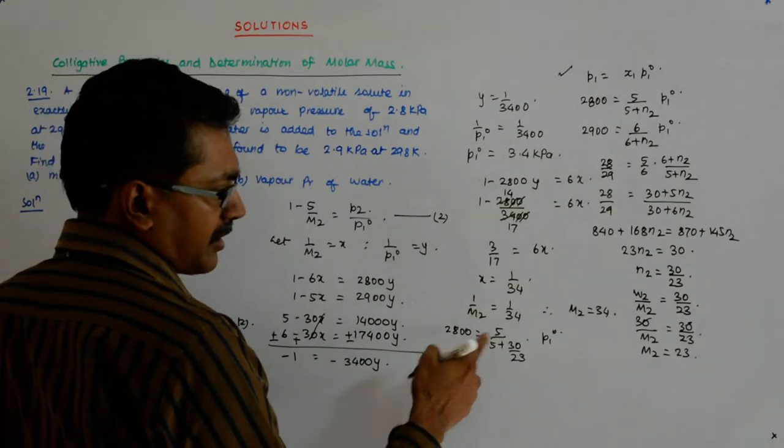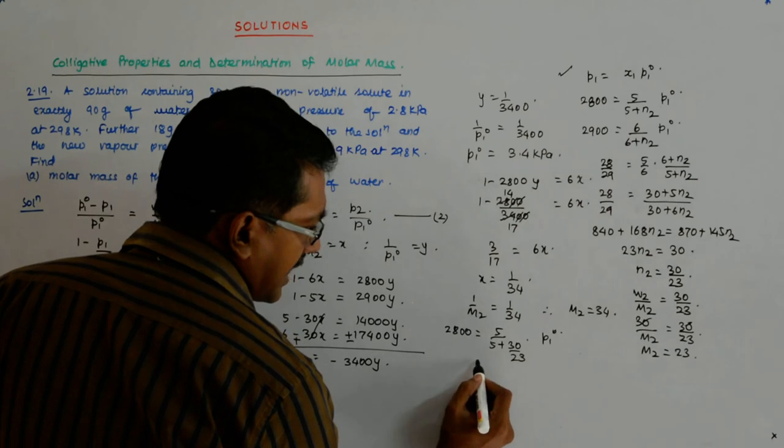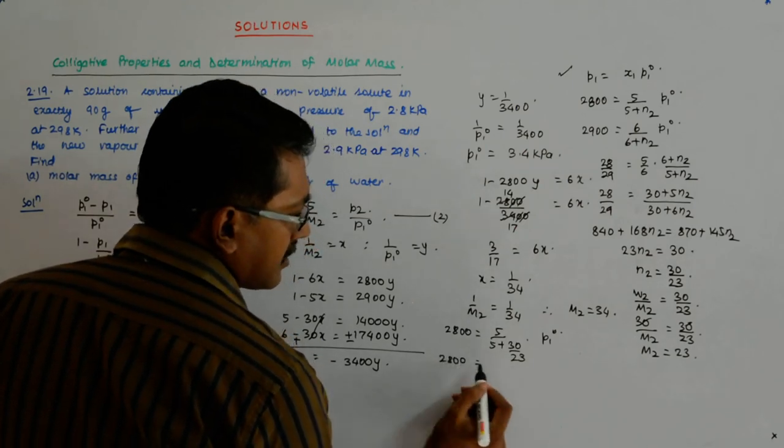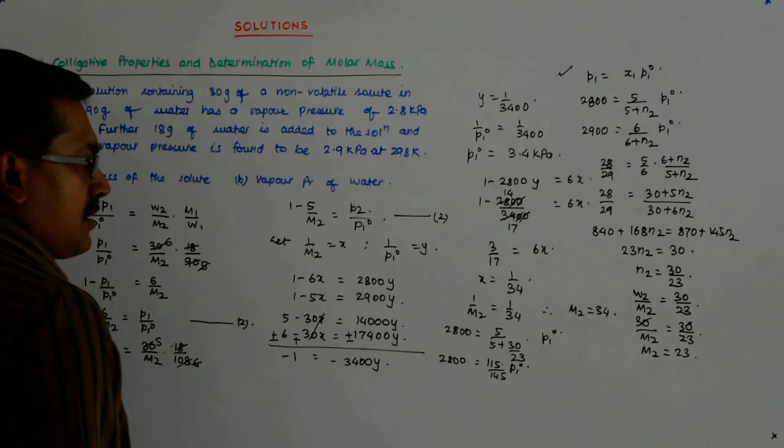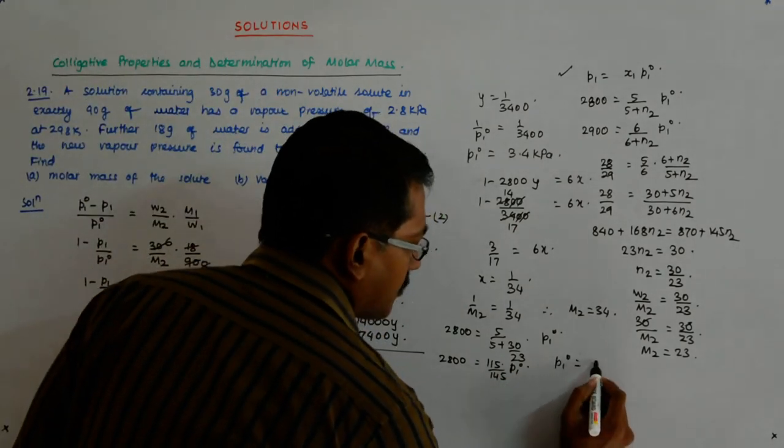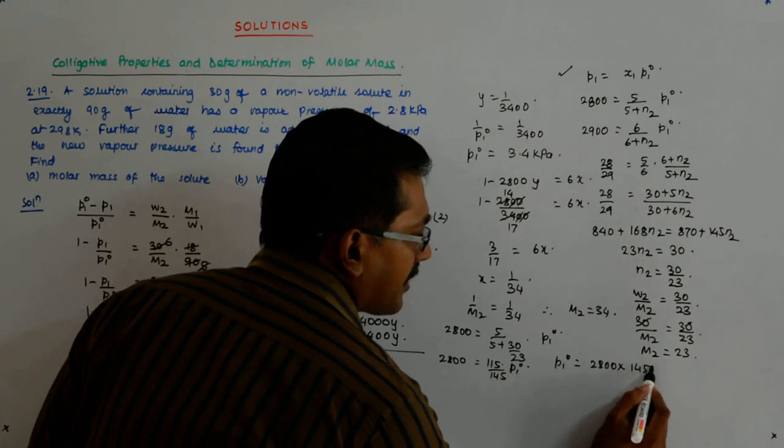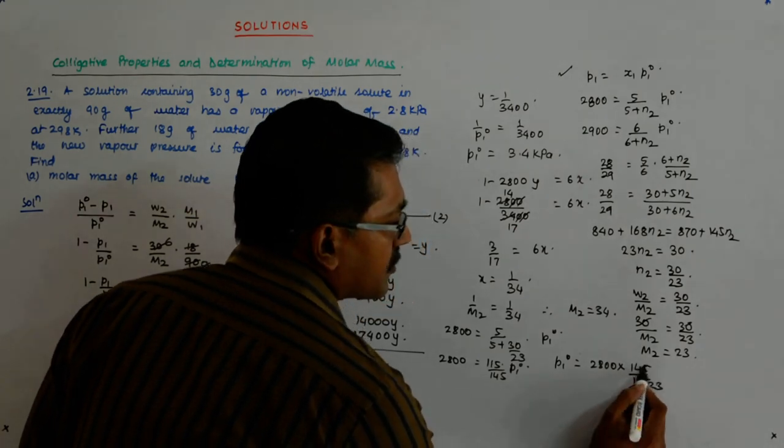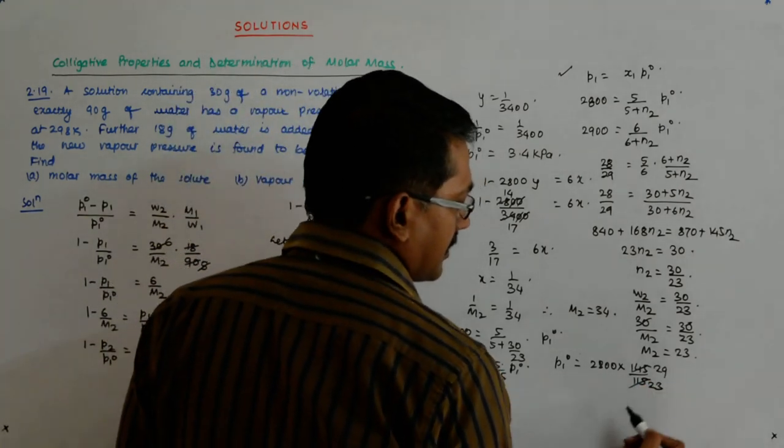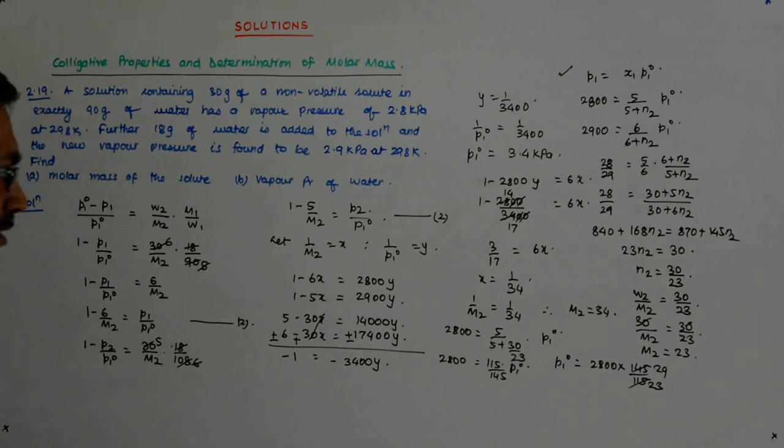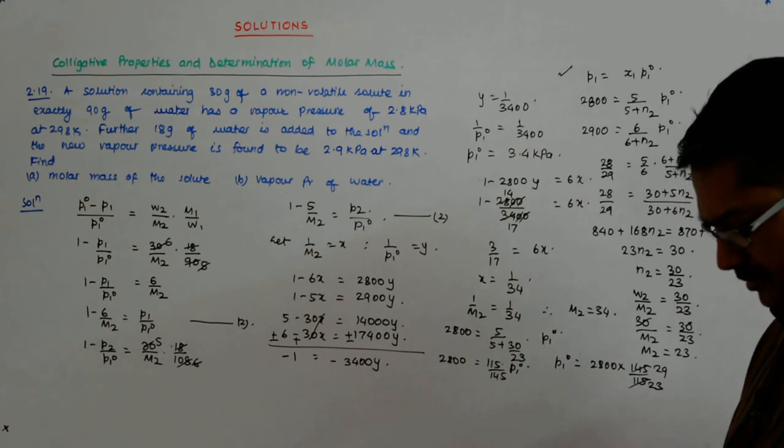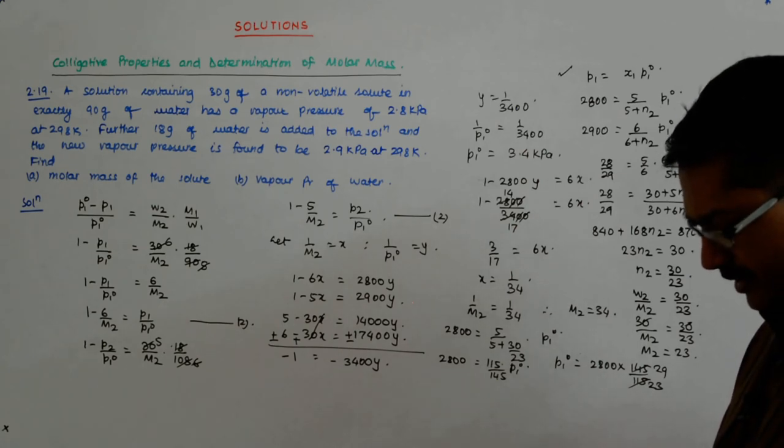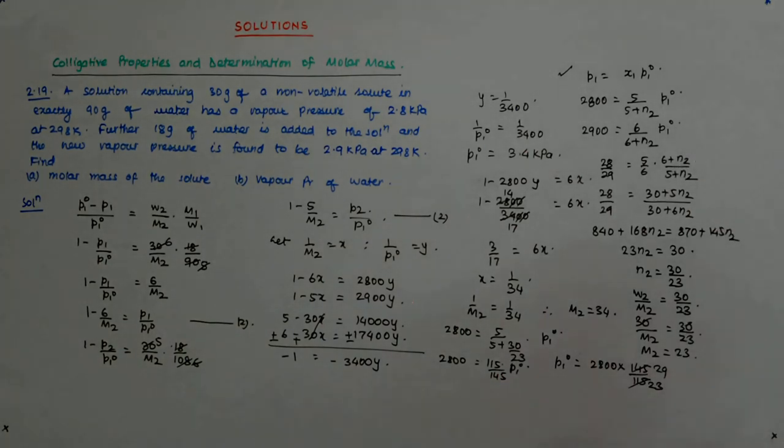Now, this is what 115, 115 plus 30 is 145, that goes up. So that gives me 2800 is equal to 115 upon 145 into P1_0. So P1_0 is equal to 2800 into 145 upon 115. This is 23 and this is 29, okay? Now, what is 2800 into 29 upon 23? 2800 into 29 divided by 23, this becomes 3530, so 353 kilopascal.